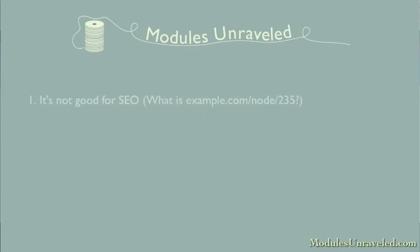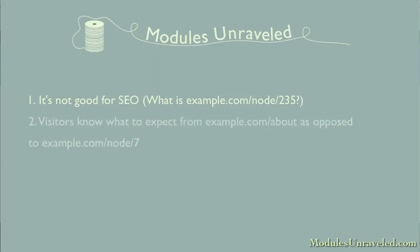However, it's not good for SEO. How is Google, or someone searching on Google, supposed to know what example.com/node/2, 3, or 5 is? If someone sends a link to your site in an email, they'll have a much better idea about what to expect if the link is example.com/about rather than example.com/node/7.